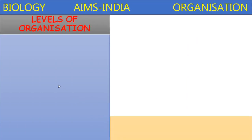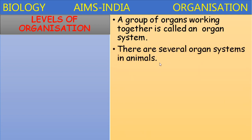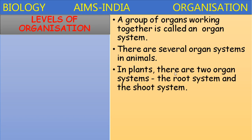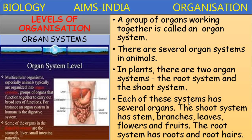The next level of organization is the organ system level. A group of organs working together is called an organ system. There are several organ systems in animals. In plants, there are two major organ systems: the root system and the shoot system. The shoot system has stem, branches, leaves, flowers, and fruits. The root system has roots and root hairs.